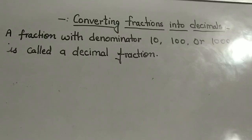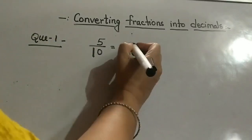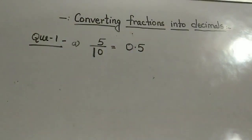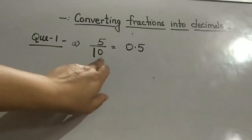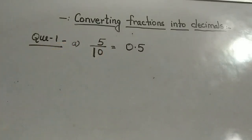So let's see the example of how to convert the fraction into decimals. See by this example, 5 upon 10 - we will write it as 0.5. So there is a simple trick to change it. We will count the zeros, the number of zeros in the denominator, and equal to the number of zeros, the decimal places should be there in the answer.